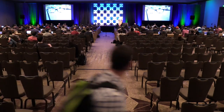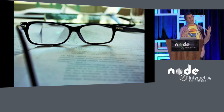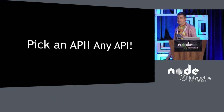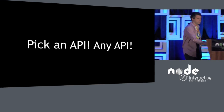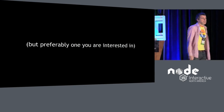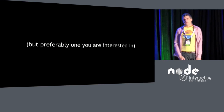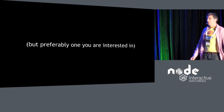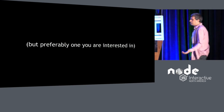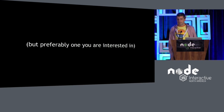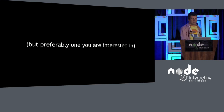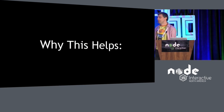Step one: pick some documentation and read it. In particular, go to the API documentation — don't try to read it front to back, but pick an API. Any API will do, preferably one you're interested in or using. If you're interested in scaling, check out the cluster API. If you've been writing web apps, look at the HTTP or HTTPS API. If you're into cryptography, look at TLS, etc.